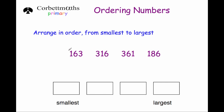To order numbers, we first consider the size of the numbers by looking at their place value columns — hundreds, tens, and units. Looking at the hundreds column, we can see that 163 and 186 both have a one in the hundreds column, giving them the smallest hundreds value.